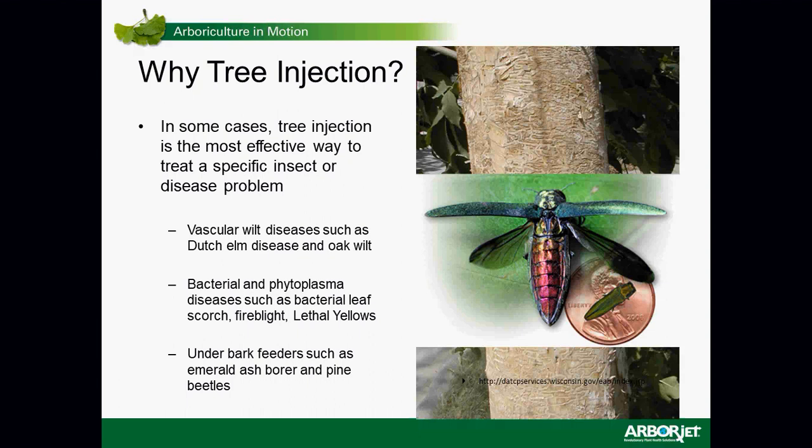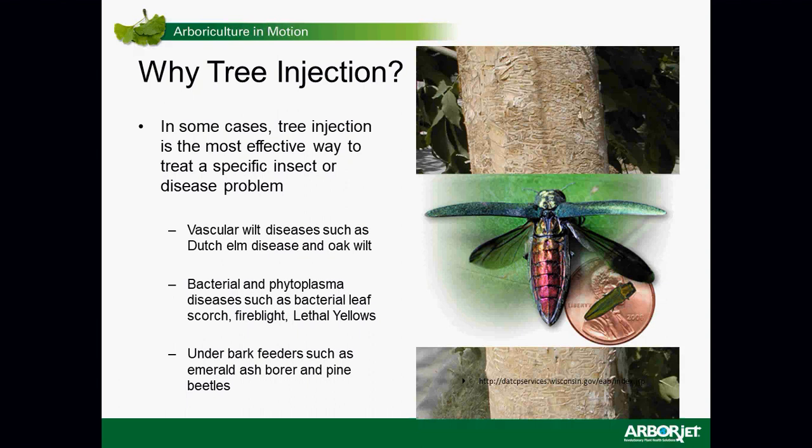Some underbark feeders also warrant tree injection — emerald ash borer is certainly in the news these days, fairly widespread especially through the Midwest, but pretty much everywhere ash grows in the states and into Canada. Pine bark beetles are another example; we're doing work with mountain pine beetle, western pine beetle, and spruce beetle. Because some of these insects and diseases are not easily controlled by topical spray applications, tree injection offers an opportunity to treat those trees.